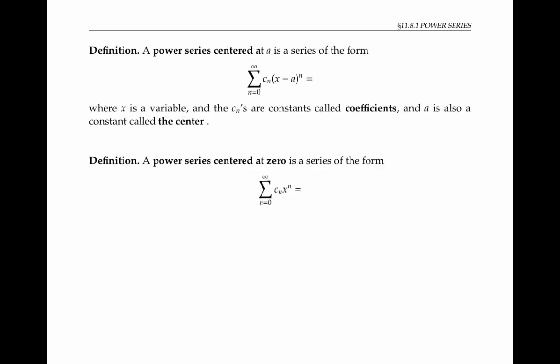In general, a power series centered at a is a series of the form, the sum from n equals zero to infinity of C sub n times x minus a to the n, where x is the variable, the C sub n's are real numbers, they're constants, called the coefficients, and a is also a real number, a constant, that's called the center.